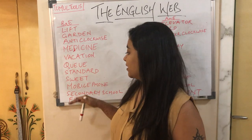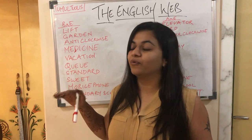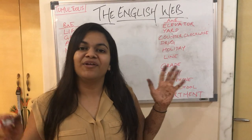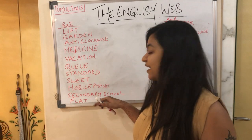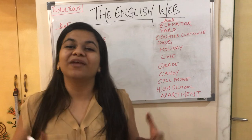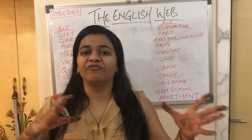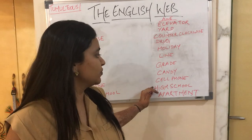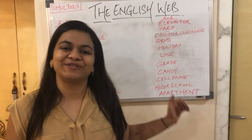Next is 'mobile phone.' As you saw at the beginning of this video, I used this word, which is British English. The American English counterpart is 'cell phone.' Then we have 'secondary school' — in British English we say 'secondary school,' whereas in American English we use the term 'high school' to refer to the same thing.